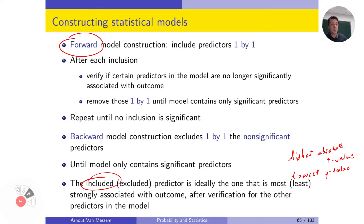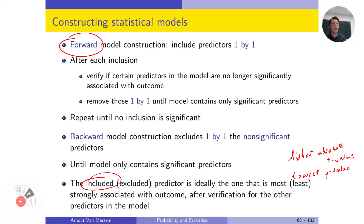Why is this the most significant predictor? Because if my p-value is the lowest, it means it is farthest from the center and we are most certain that this predictor is significantly different from zero. We add this predictor to the model and start again, checking each of the remaining predictors by adding them one at a time alongside the selected predictor.